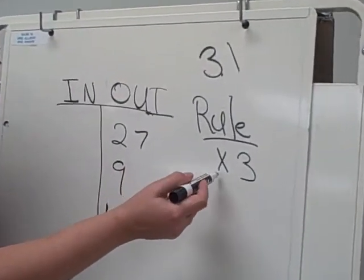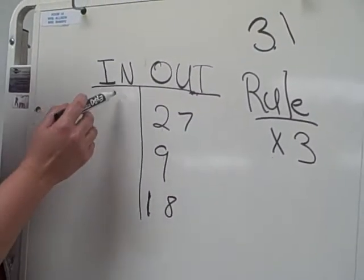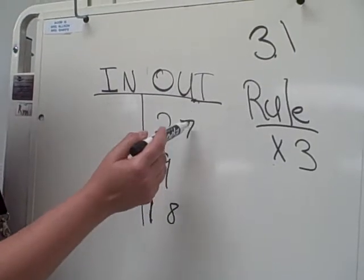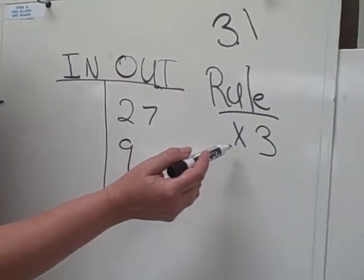Our rule today is going to be multiplying by 3. Instead of being given the in information, today we are being given the out information. What information do we end up with when we multiply by 3?